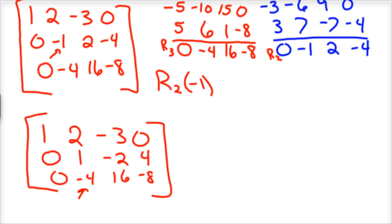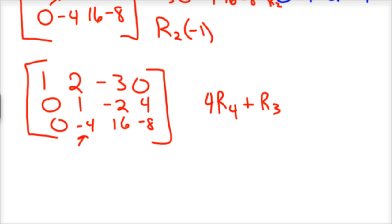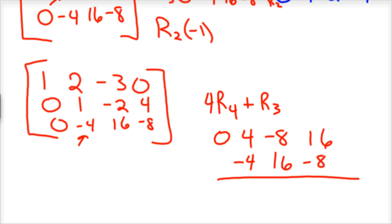We need a 0 in the next position. So take 4 times row 2 plus row 3 to get a new row 3. 4 times row 2 is 0, 4, negative 8, 16. Added to row 3 (0, negative 4, 16, negative 8), that gives 0, 0, 8, 8.